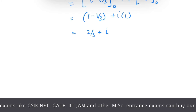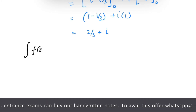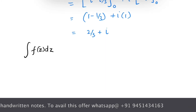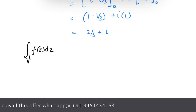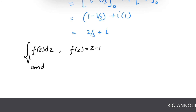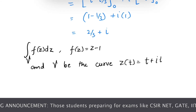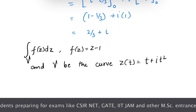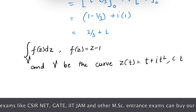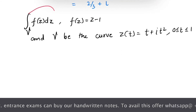Now let's do one more problem. We have to integrate f(z) dz along contour γ, where f(z) = z − 1, and γ is the curve z(t) = t + i·t², with t defined from 0 to 1.